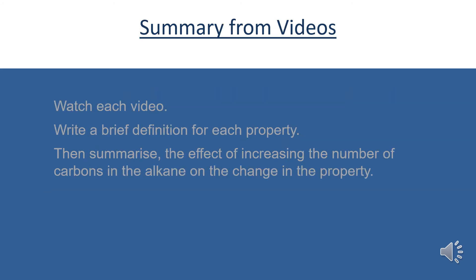Watch the three videos in turn and write a brief definition for each property. Then summarize the effect of increasing the number of carbons in the alkane on the change in the property. You're going to look at viscosity, ease of evaporation, and flammability.